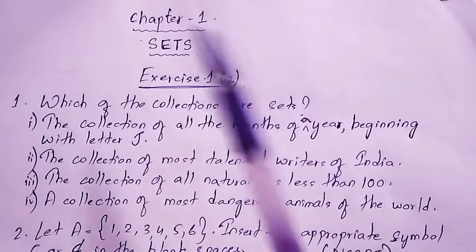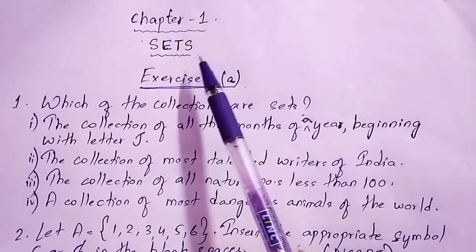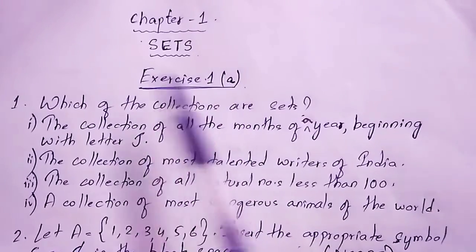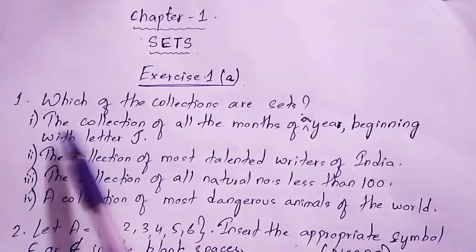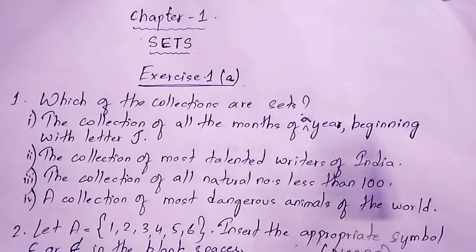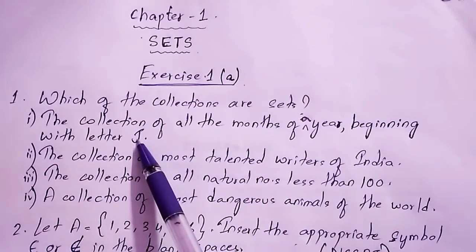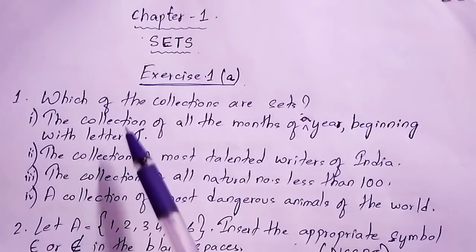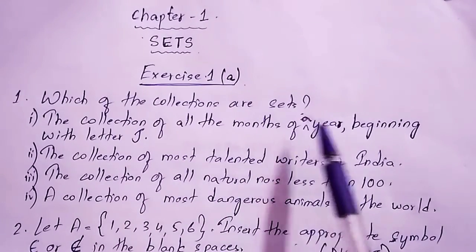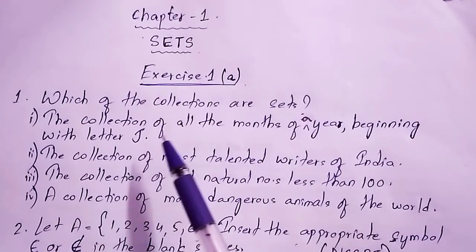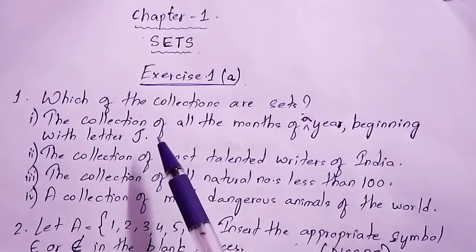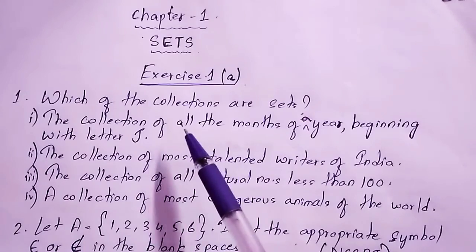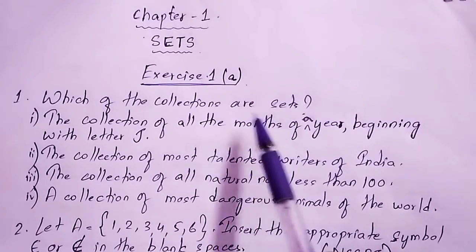Before starting the chapter on Sets, you must know what a set is. A set is a well-defined collection of objects. For example, the collection of all the months of a year beginning with the letter J — that is January, June, and July. This is fixed and well-defined, so this is a set.